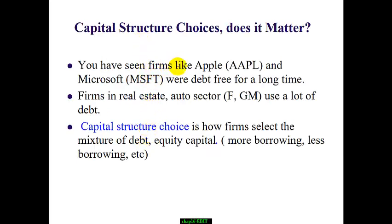You probably have seen firms like Apple and Microsoft — they stayed debt free for a long time. While other companies such as Ford and GM tend to use more debt. How a company finances its capital — whether they use more debt or more equity — is a capital structure choice. Capital structure choice is the mix of debt and equity.